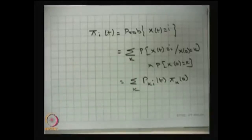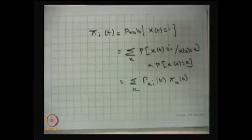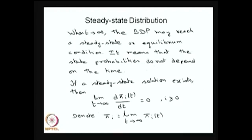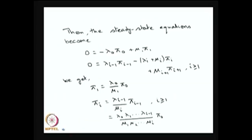Whenever the steady state distribution exists, the state probabilities are independent of time t, so as t tends to infinity, pi_i(t) can be written as pi_i. Whenever the steady state solution exists, the limit as t tends to infinity of the derivative of pi_i(t) is 0. I am going to use these two conditions to get the steady state probabilities for the birth-death process.